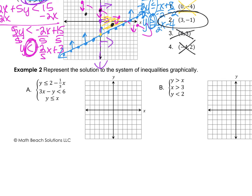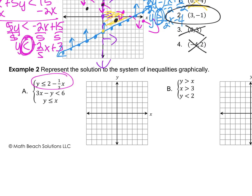Example two: the first inequality is already in slope-intercept form. Notice the y-intercept is 2 and the slope is -1/3, so go down 1 right 3. It includes equal to, so it's a solid straight line. Since y is less than, shade below the line.